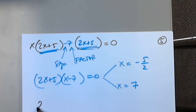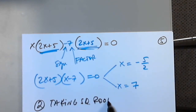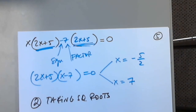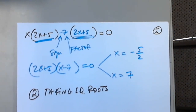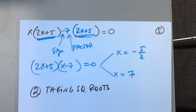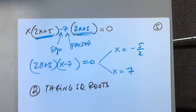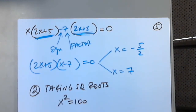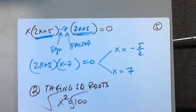Now the method of taking square roots. It is a very useful method as long as the equation is already set up for the method, like x squared equals 100. We just solved that by factoring, but now I'll do something else — I'm going to take square roots from both sides.